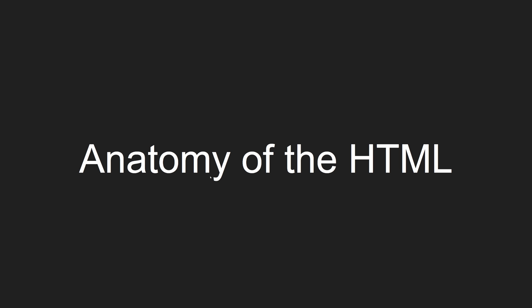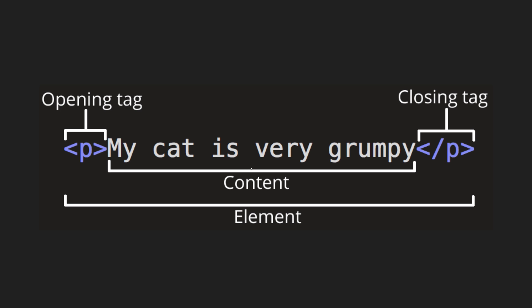This video is about the anatomy of HTML. In the previous video, we learned what is an element, what is a tag, and all those things. Now, let's try to see where the tag comes and which part is actually the element. If you look at a basic HTML element, it will be something like this. From the opening of the p tag to the closing of the p tag, we call it as an element.